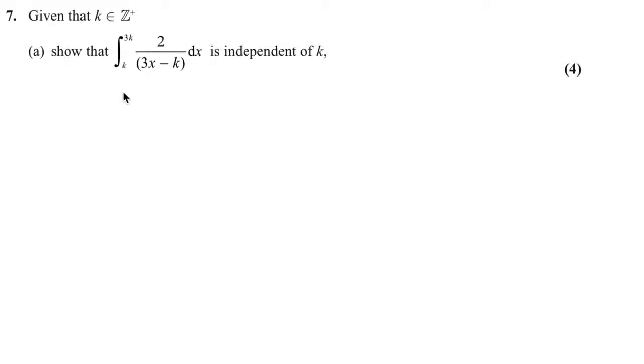Part A says that given k can be any positive integer, show that the integration of this is independent of k. We'll worry about what independent of k means as we get through the question, but let's just start trying to integrate. If we don't know what this means, the best thing to do is just start trying to integrate and see what happens.